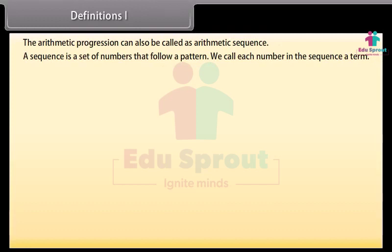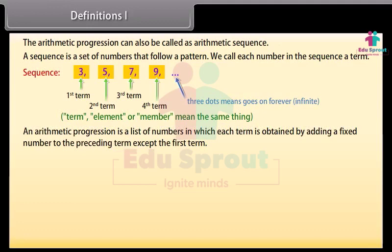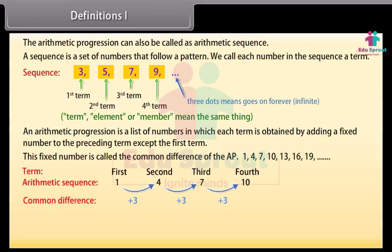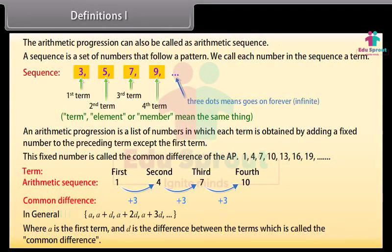We call each number in the sequence a term. Look at this example of sequence — this is the first term, this is the second, this is the third and so on. An arithmetic progression is a list of numbers in which each term is obtained by adding a fixed number to the preceding term except the first term. This fixed number is called the common difference of the AP. In general, we can write an arithmetic sequence as: A, A plus D, A plus 2D, A plus 3D and so on, where A is the first term and D is the common difference.